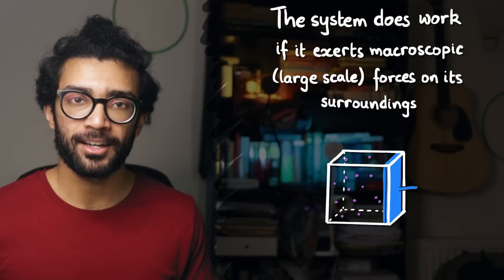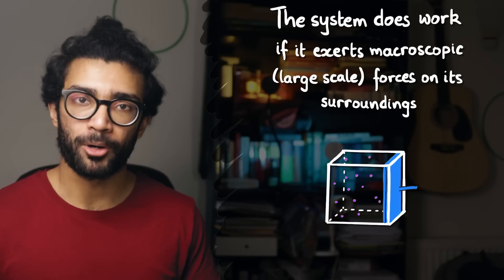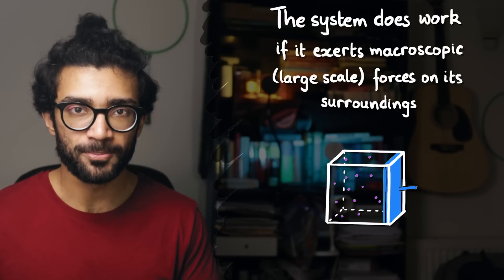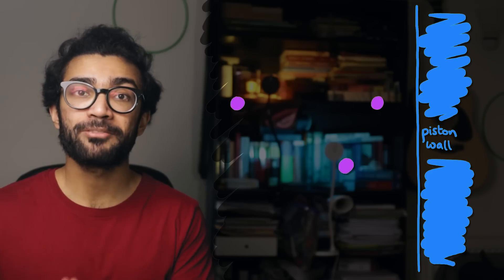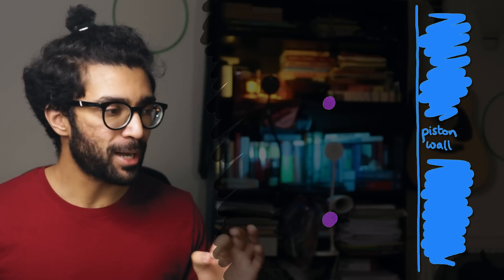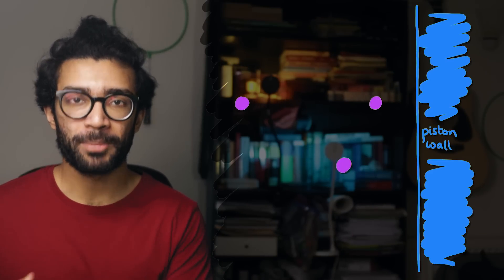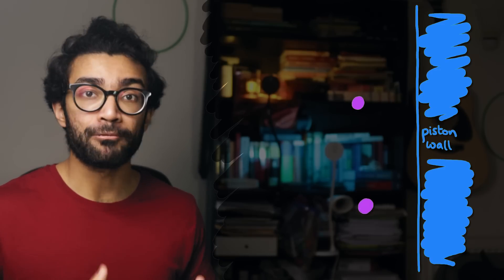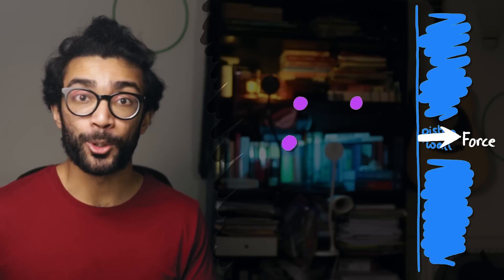Well, gas particles, like we said earlier, will be moving around inside our box in all sorts of random directions. They will collide with each other and many of them will collide with the wall of our piston. All these microscopic collisions with the wall of our piston will result in a very real macroscopic measurable force on the piston.